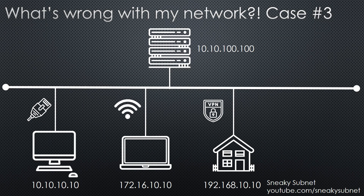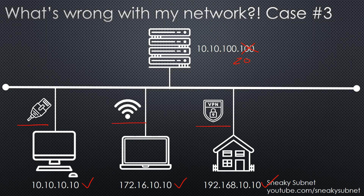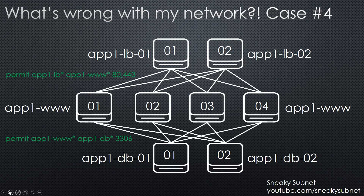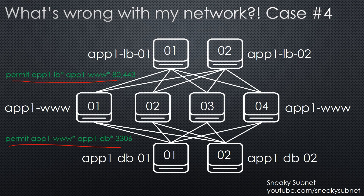Can you implement identity-based security so that whenever and wherever a user joins your network via wired connection, via Wi-Fi, or via VPN from his home, he gains only those privileges he is allowed — even if his IP address changes over time or even a server's IP address has changed? Can you implement firewall rules based on VM names, implement them at the hypervisor level in the same VLAN and same IP subnet, and not change a thing after a VM migrates to another host on the opposite side of your data center or even to another data center?